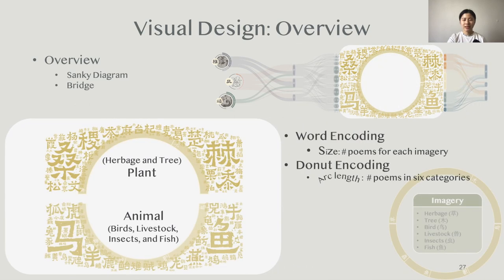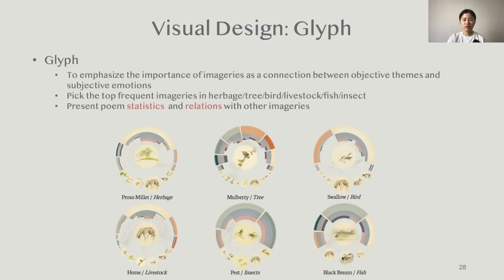For the imaginary, we partition it into plants and animals. The word size encodes the number of poems each imaginary exists in. In the inner donut chart, we use arc length to encode the number of poems in each imaginary category. To emphasize the importance of imaginaries, we distilled the six top frequently appeared imaginaries in each category to show the poem statistics.